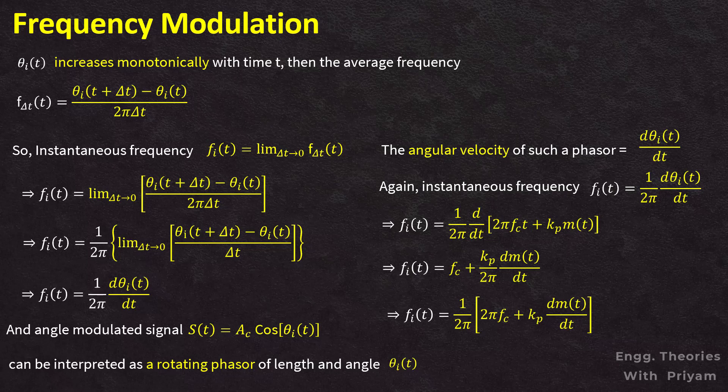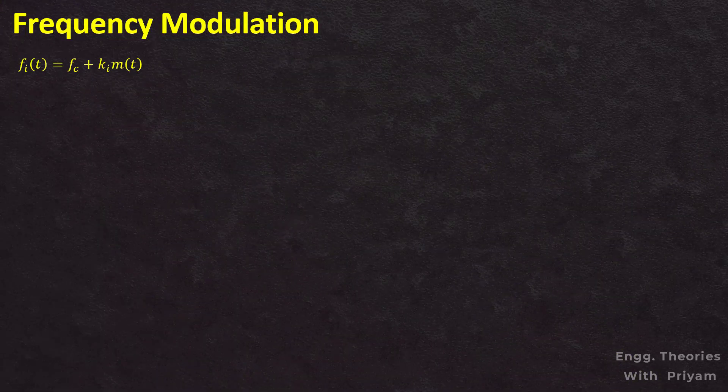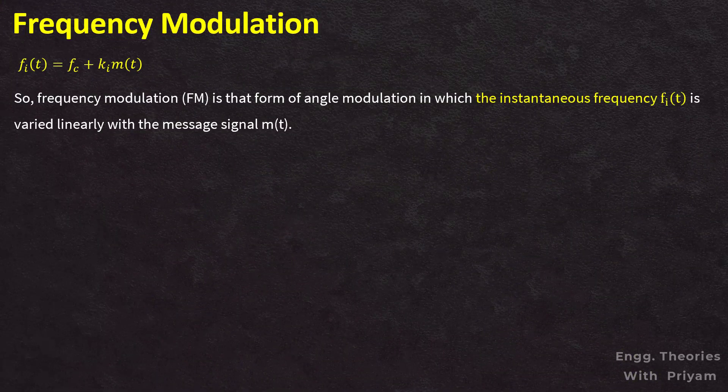For frequency modulation, the change in fi(t) from fc (the unmodulated carrier frequency) is called the frequency deviation, and it should be proportional to the amplitude of the message signal m(t). So we write fi(t) = fc + ki·m(t), where fc is the frequency of the unmodulated carrier and ki is the frequency sensitivity factor, representing the change in instantaneous frequency per unit amplitude of the modulating signal with units of hertz per volt.